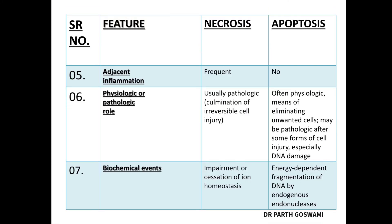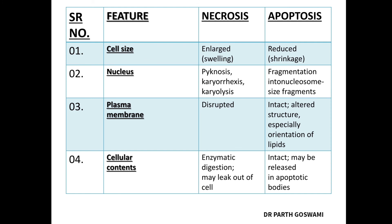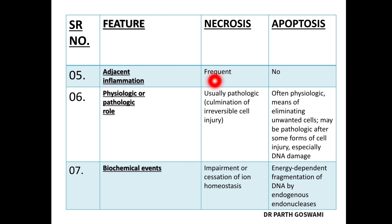To summarize the key differences: in necrosis you have plasma membrane damage, while in apoptosis the plasma membrane is not damaged but altered, forming apoptotic bodies. Because of cell membrane damage in necrosis, you have inflammation and release of cell content, while in apoptosis inflammation is absent. Apoptosis can be physiological or pathological, while necrosis is always pathological.